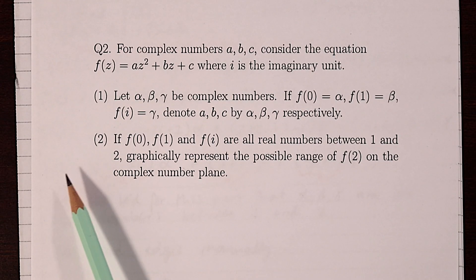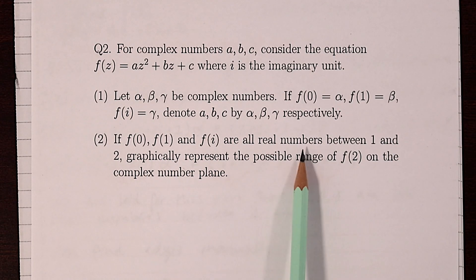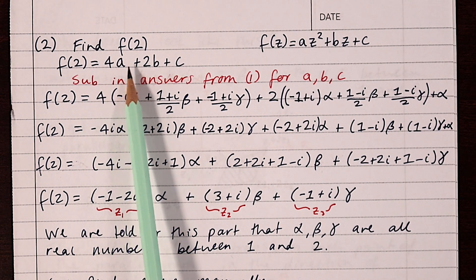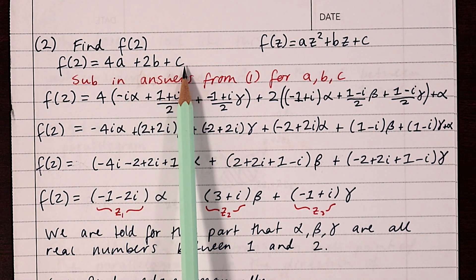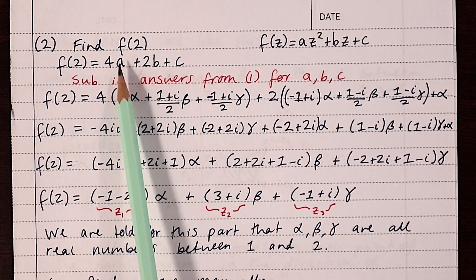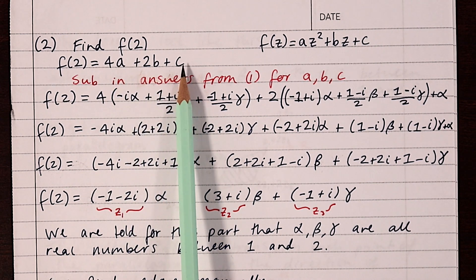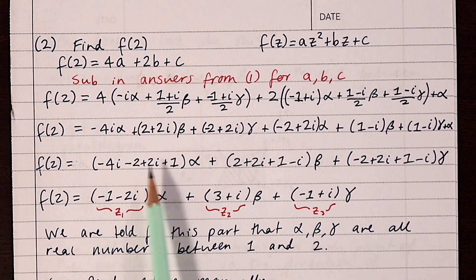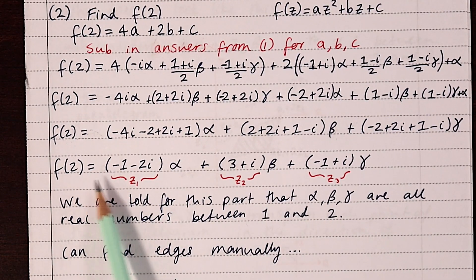Then for part two, they're saying that alpha, beta, and gamma are all real numbers between one and two. And if we set z to be equal to two, they want us to graphically represent the range of that function. So if we set z to two, we get 4a plus 2b plus c. Then if we substitute in our previous answers for a, b, and c, we get this pretty long equation here, but we can simplify it all the way down to this line.